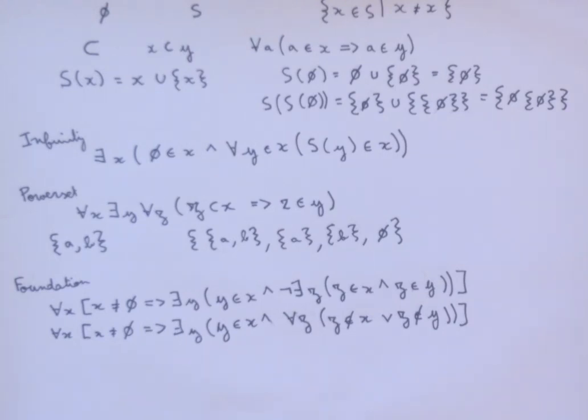because if a set contained itself as an element, then the set itself would be that Z. It would be a Z which is both in X, the set, and it would also be in Y, the instance of the set that's contained in the set. And so that's one thing that foundation prevents.